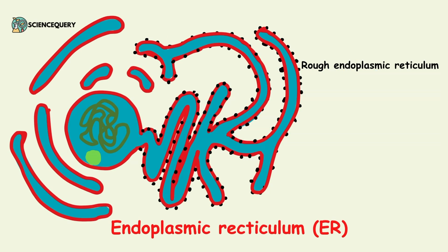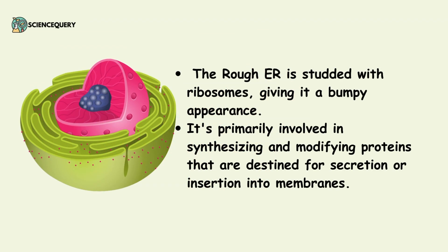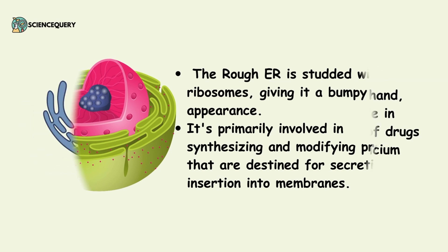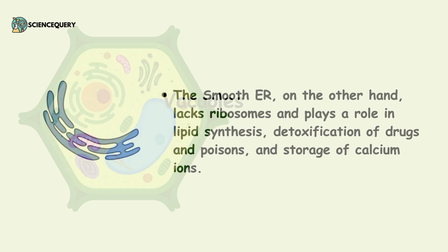Endoplasmic reticulum is another important organelle of a cell. It is of two types: rough endoplasmic reticulum and smooth endoplasmic reticulum. The rough endoplasmic reticulum is studded with ribosomes, giving it a bumpy appearance, and is primarily involved in the synthesis and modification of proteins destined for secretion or insertion into the membrane. The smooth endoplasmic reticulum lacks ribosomes and plays a role in lipid synthesis, detoxification and storage of calcium ions.